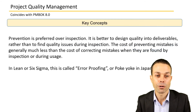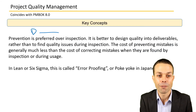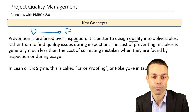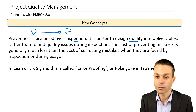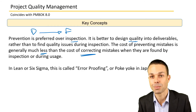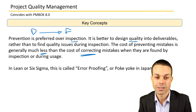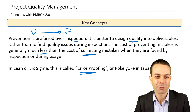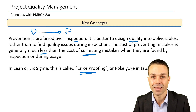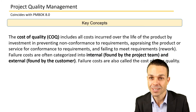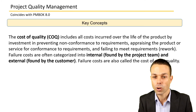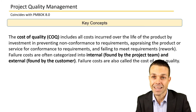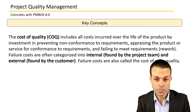Prevention: we want to prevent defects rather than find them, so prevention is preferred over inspection always. It's better to design quality into the deliverables rather than find quality issues later on. The cost of preventing is also usually less than the cost of correcting mistakes once found. In lean or six sigma, this is also called error proofing, or poka-yoke in Japanese — building in that quality and error proofing into the process or deliverable you're working on. Cost of quality includes all costs incurred over the life of the product by investment in preventing non-conformance.